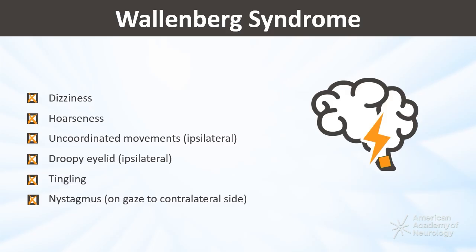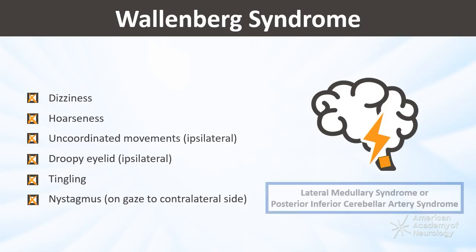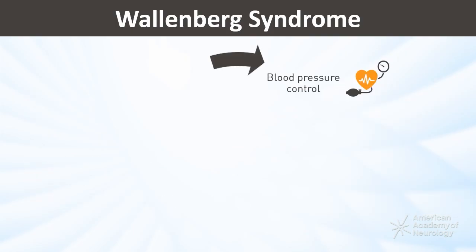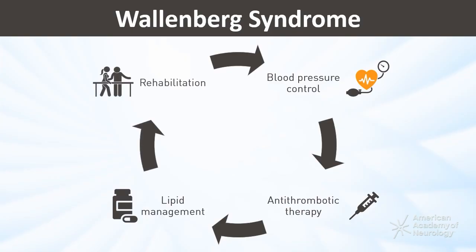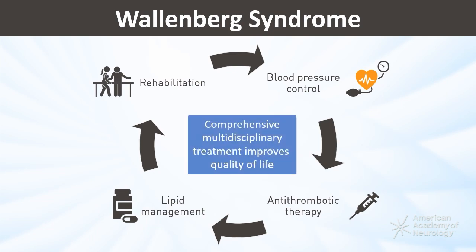This condition often results from posterior inferior cerebellar artery occlusion. Management involves a multidisciplinary approach, including acute stroke care, risk factor management, and rehabilitation. Prognosis varies depending on the extent and location of the injury. However, the implementation of a comprehensive treatment strategy has been shown to markedly enhance the patient's overall quality of life.